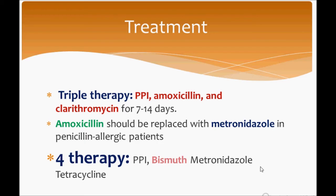To summarize: remember the indications for endoscopy — age above 45 to 50 years with epigastric pain, vomiting, bleeding. You should investigate with endoscopy in these cases. Otherwise, you can give triple therapy on a clinical basis and observe the results. Thank you so much for watching.